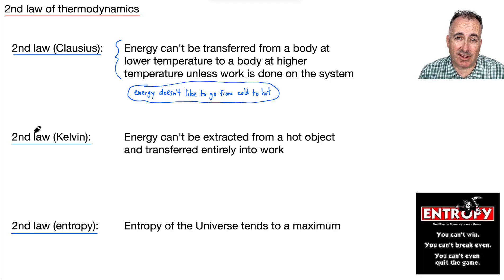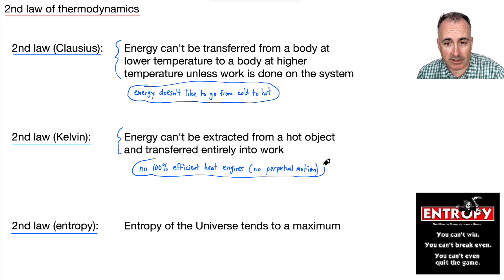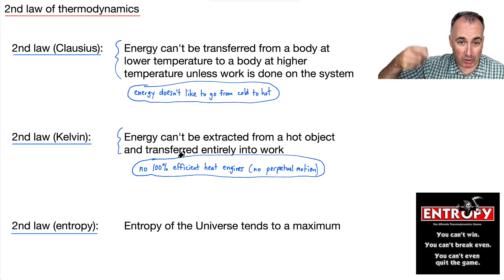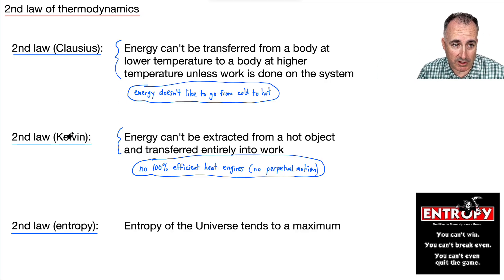Another version of the second law is called the Kelvin version. We would say energy can't be extracted from a hot object and transferred entirely into work. So what does that really mean? It means there's no such thing as 100% efficient heat engines. Another way to say that is you can't have a perpetual motion machine. Something that just keeps doing its motion forever and ever, there will always be some losses. And because of that, a machine, if you leave it by itself, it'll always eventually stop working. So that's an important second one here.